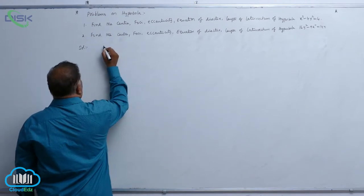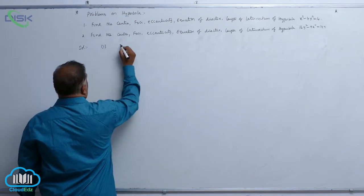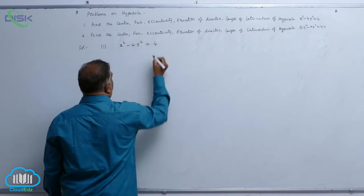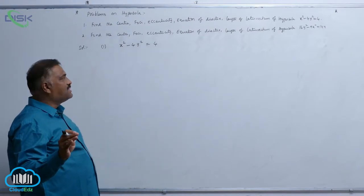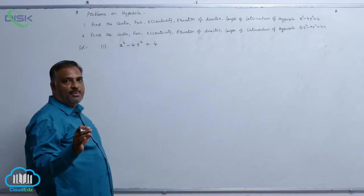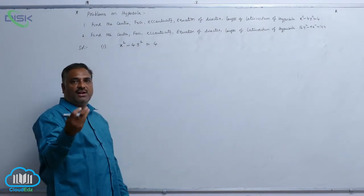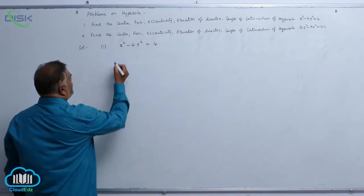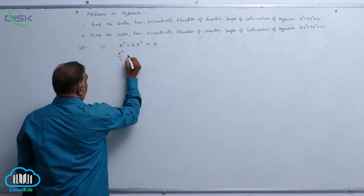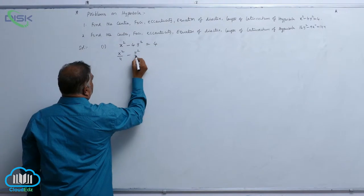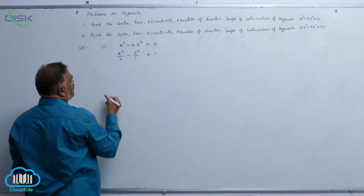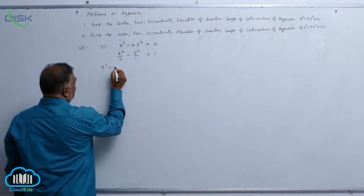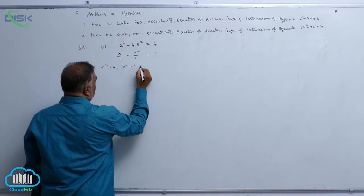First, question number 1: x² - 4y² = 4. If the hyperbola is given in any format, first convert it to standard form. That is, x²/4 - y²/1 = 1. Here, a² = 4 and b² = 1.